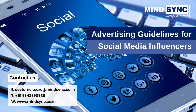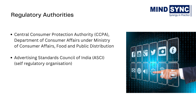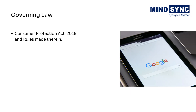The Central Consumer Protection Authority (CCPA) is a regulatory body established in 2020, based on the provisions of the Consumer Protection Act 2019. CCPA works under the administrative control of the Department of Consumer Affairs under the Ministry of Consumer Affairs, Food and Public Distribution. CCPA regulates matters relating to violation of rights of consumers, unfair trade practices, and false or misleading advertisements prejudicial to interests of the public. The Consumer Protection Act 2019 is an act to provide for the protection of consumers' interests and to establish authorities for the timely and effective administration and settlement of consumer disputes.